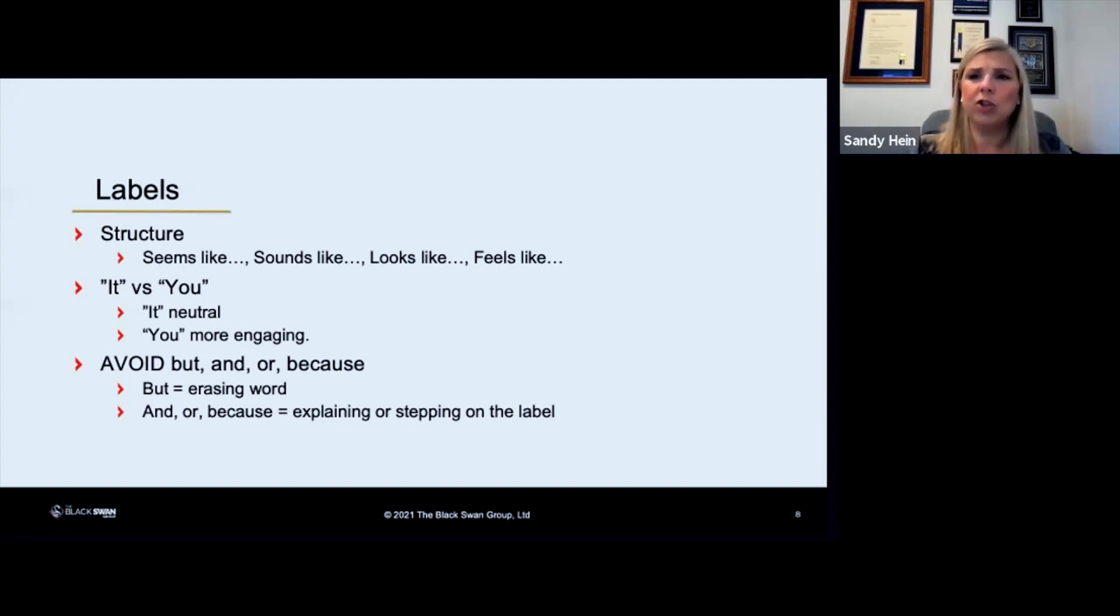If you use the words and or because, you're actually either explaining the label or you're stepping on it. So what you need to do instead of actually putting one of those words in there after you use a really good label, or even after a mirror, you want to just go quiet. Let the person process what you just said. Don't erase it or explain it right away. One thing I want you to remember through this process is if you are explaining, you're losing. So when you use our skills, you don't want to explain them. You want to drop them. It's like dropping the mic. You just put it out there and let it sit.